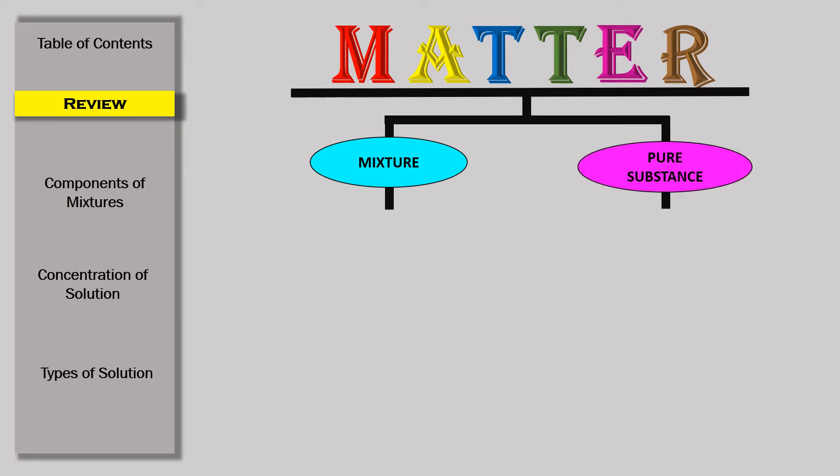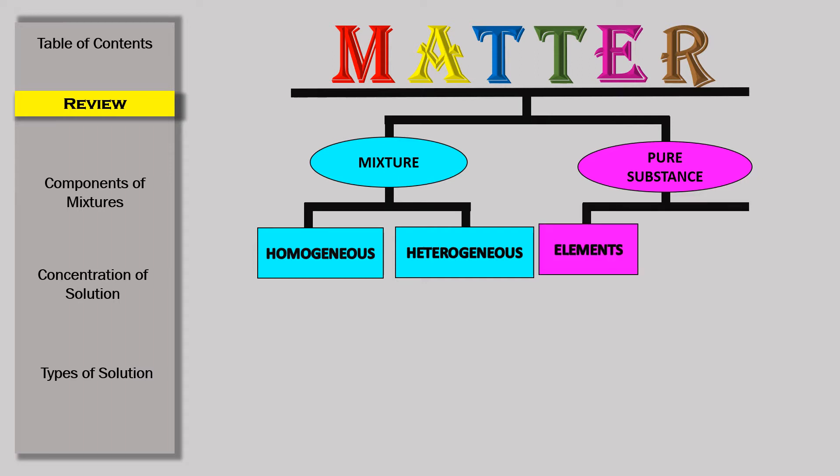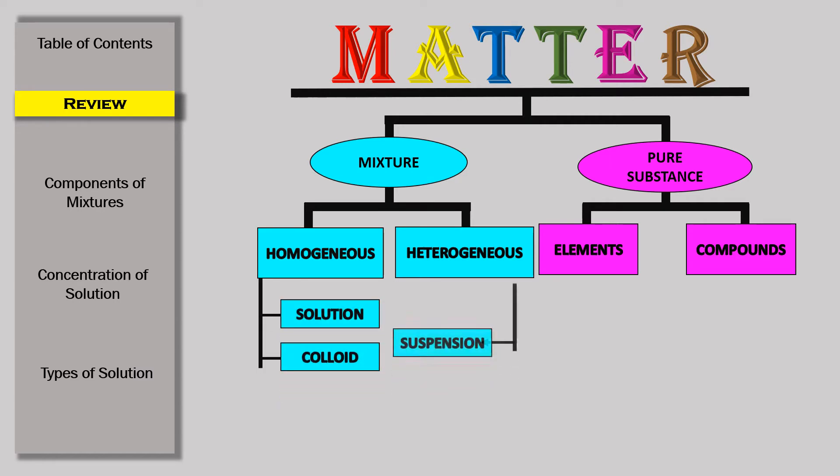Furthermore, mixture can be classified as either homogeneous or heterogeneous, while pure substance can either be elements or compounds. Going back to the mixture, examples of homogeneous mixtures are solution and colloids, while heterogeneous are suspension.